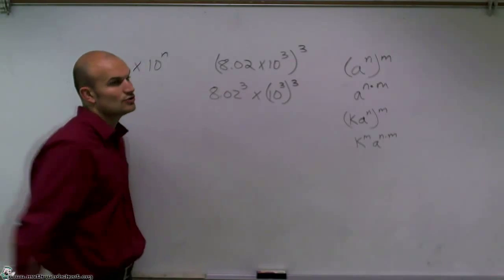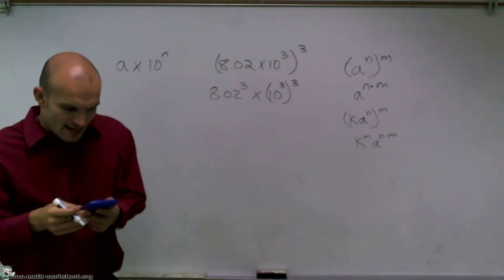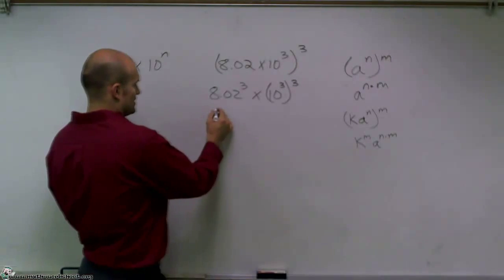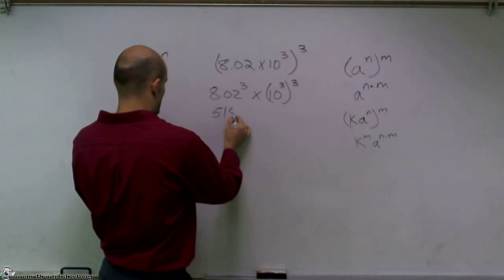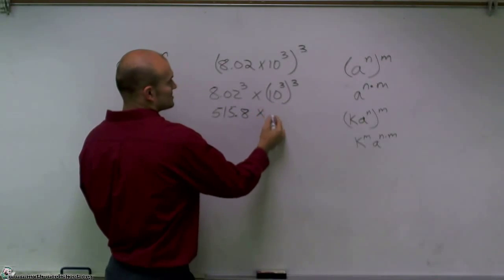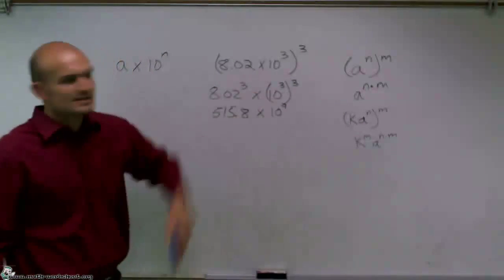Well, 8.02 to the third power, I don't know that off the top of my head. So I'm going to type it in my calculator. And I'm just going to round that to the nearest tenth, which is going to be 515.8 times, and this will be times 10 to the ninth power, as 3 times 3 equals 9.